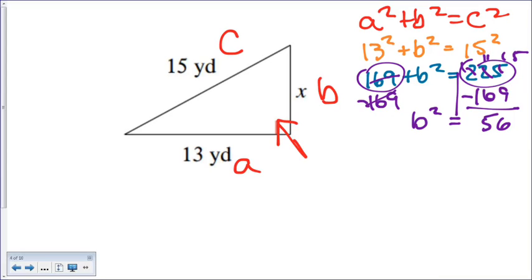So, B squared equals 56, and in order to get rid of a square, we have to take the square root of both sides, and so this is where our knowledge of simplifying square roots comes in. So, the square root of B squared is B, and now we have to break down 56.